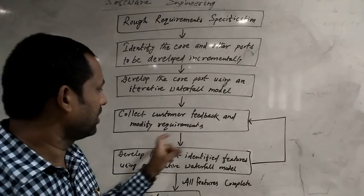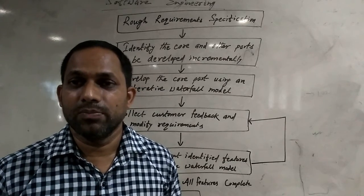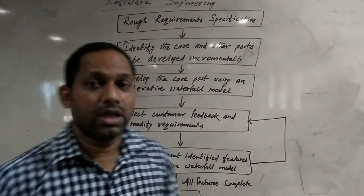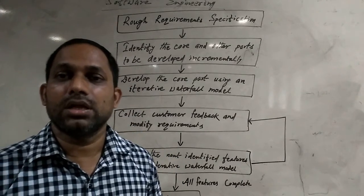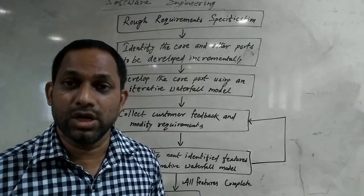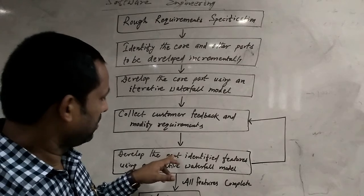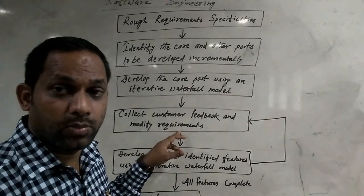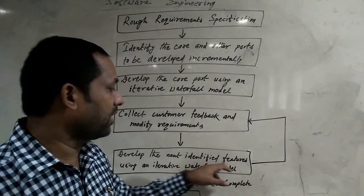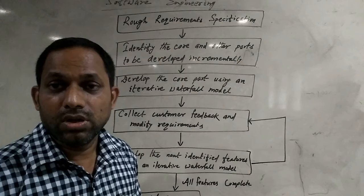We select customer feedback and modify requirements. The module is developed to satisfy the customer. If you want to add some new features, you give feedback. Once this module is fully developed, you can add feedback, and then the next identified features are developed using an iterative waterfall model. Then the next module is developed.